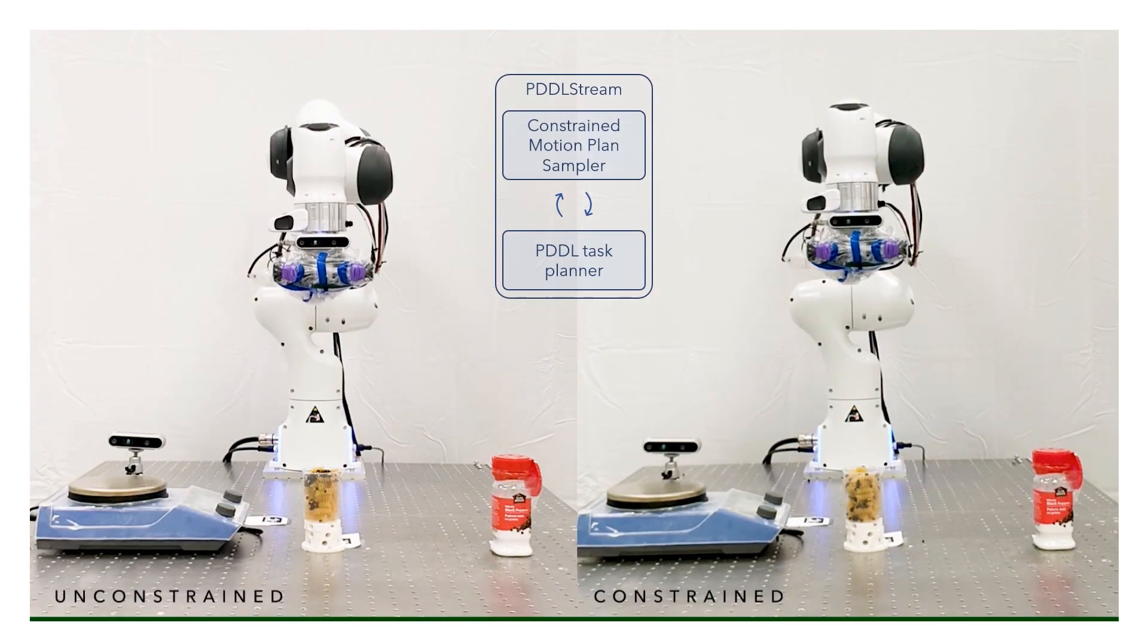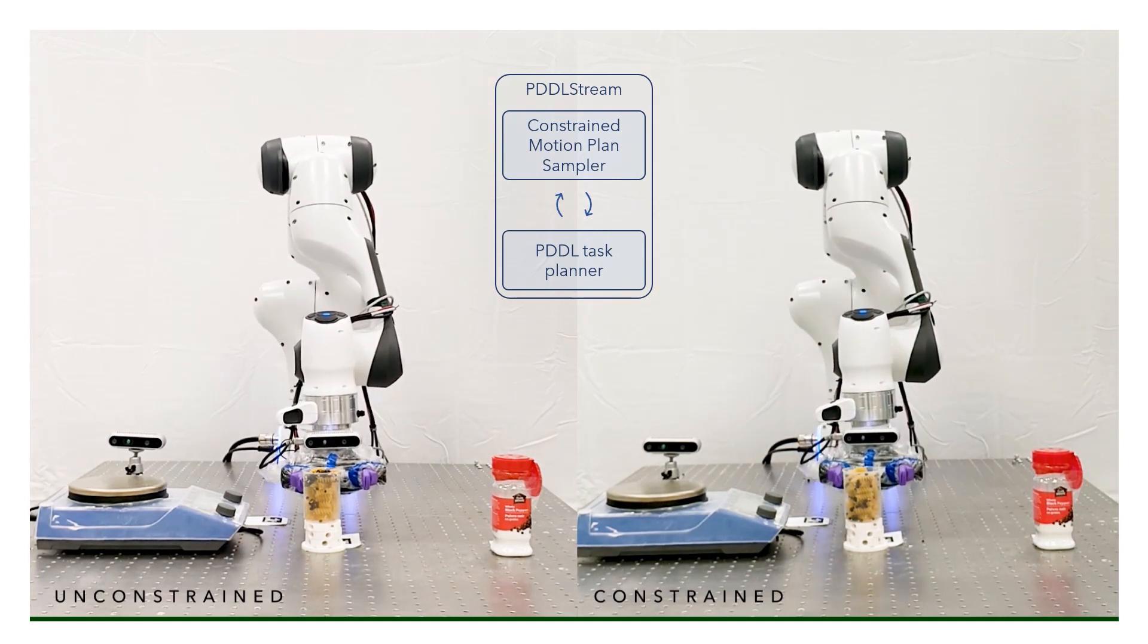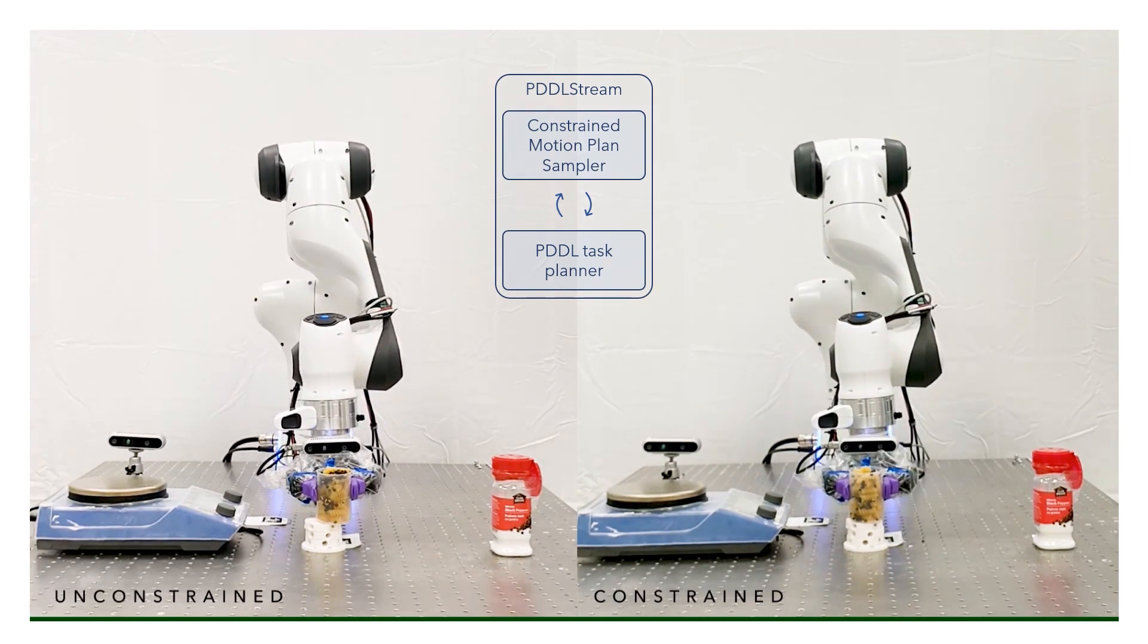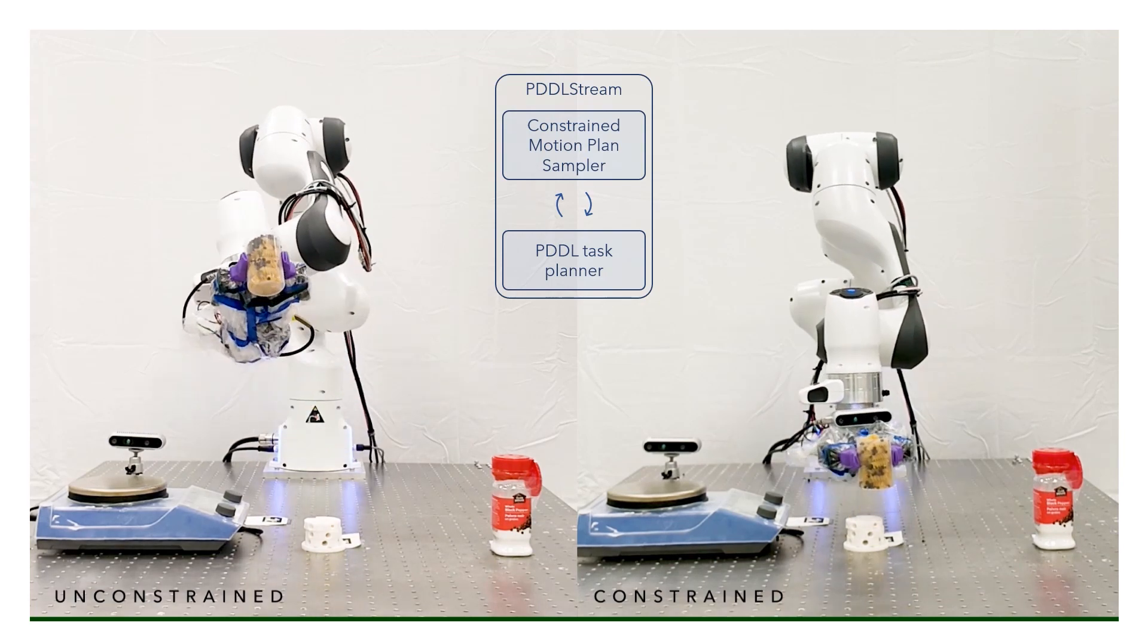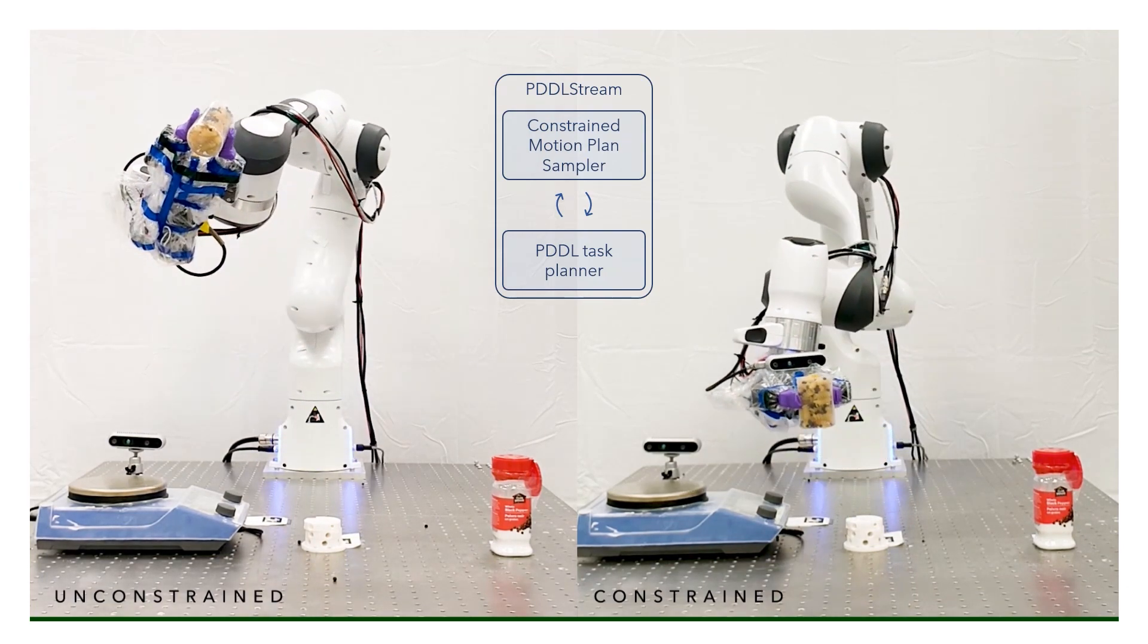We use PDDL-Stream to do integrated task and motion planning. PDDL-Stream is extended with a custom-constrained motion planner to ensure that chemical reagents are not spilled during manipulation, the importance of which is shown in this video.